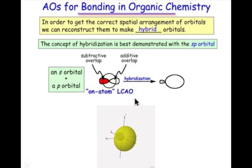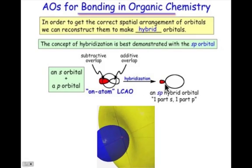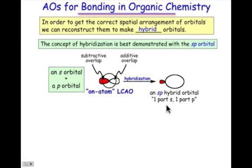And again, they'll have a nodal plane, not exactly at but very close to the nucleus, which is located right here. We say that this is a new atomic orbital derived from one part p, one part s.